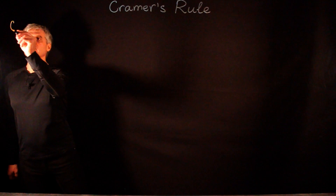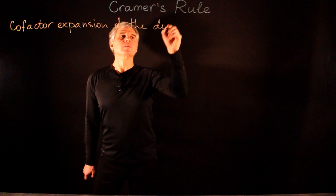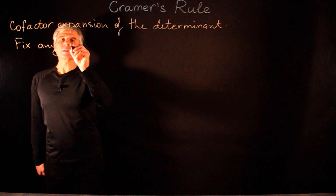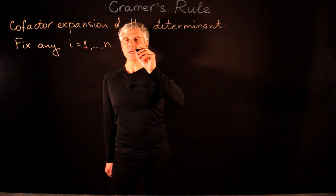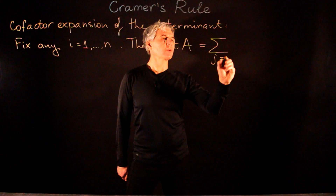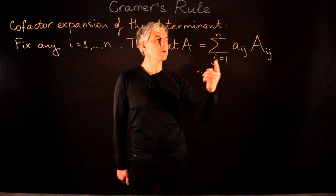In our last lecture, we proved the following cofactor expansion of the determinant. We fix any index i from 1 to n, and then we can express the determinant of a matrix as the sum where j goes from 1 to n of A_ij times the cofactor A_ij. Here i is fixed and we have a summation in j.